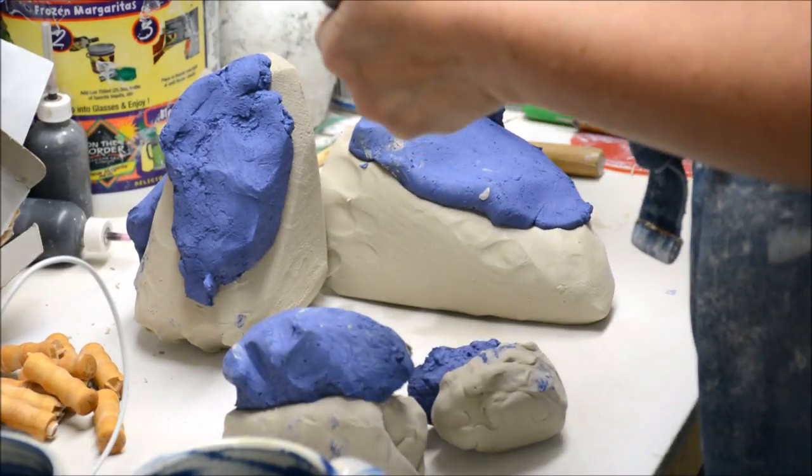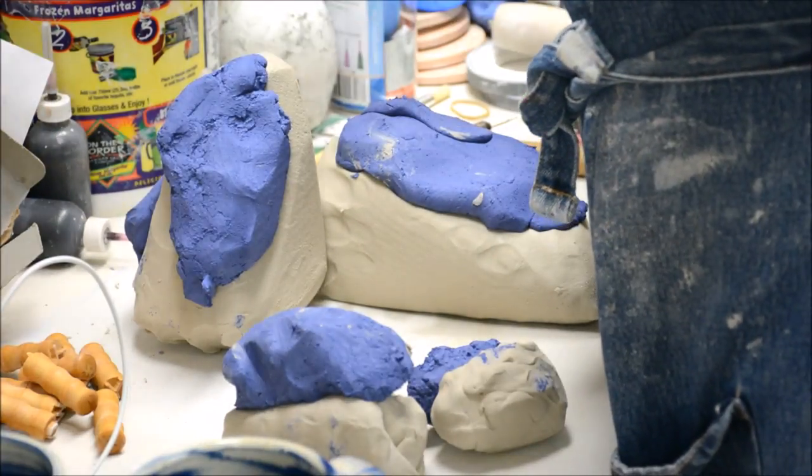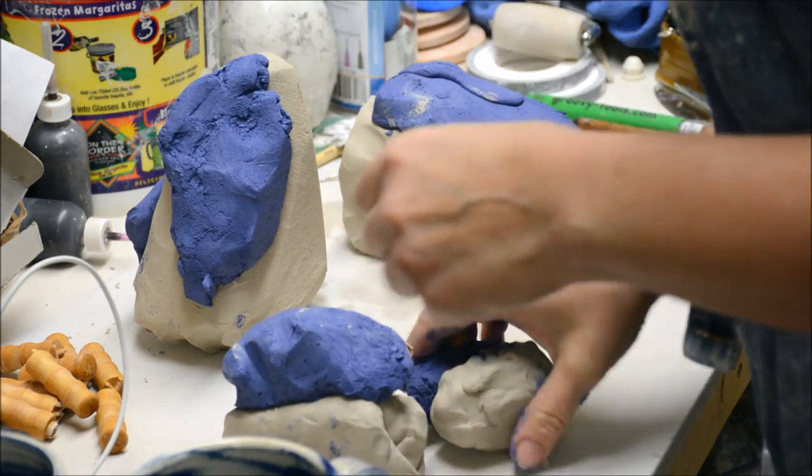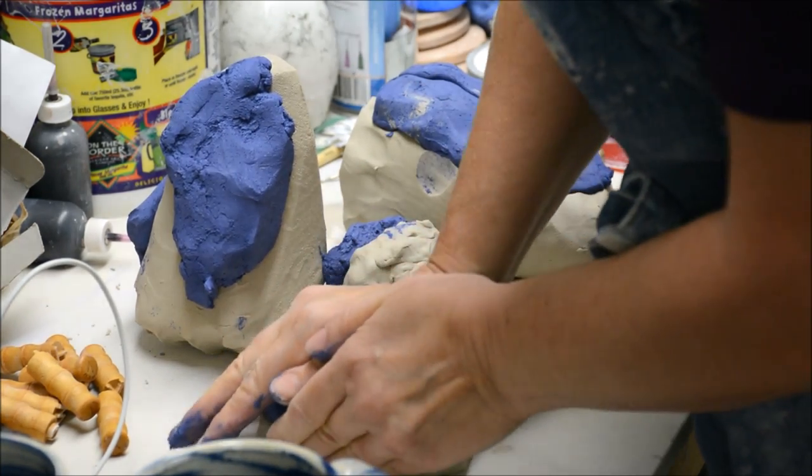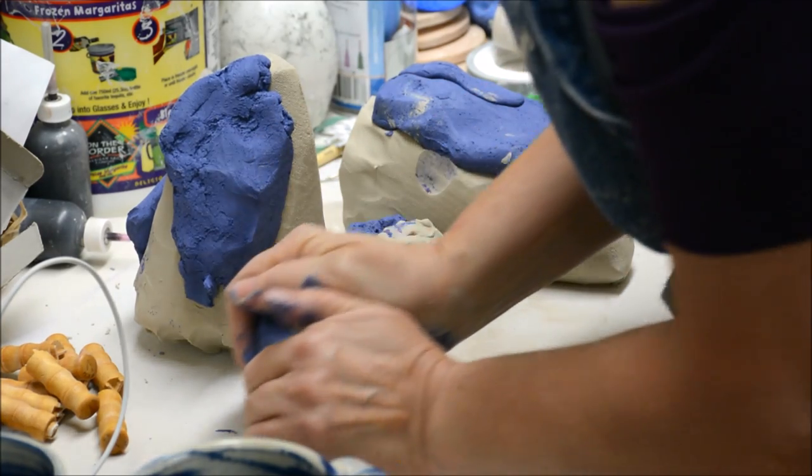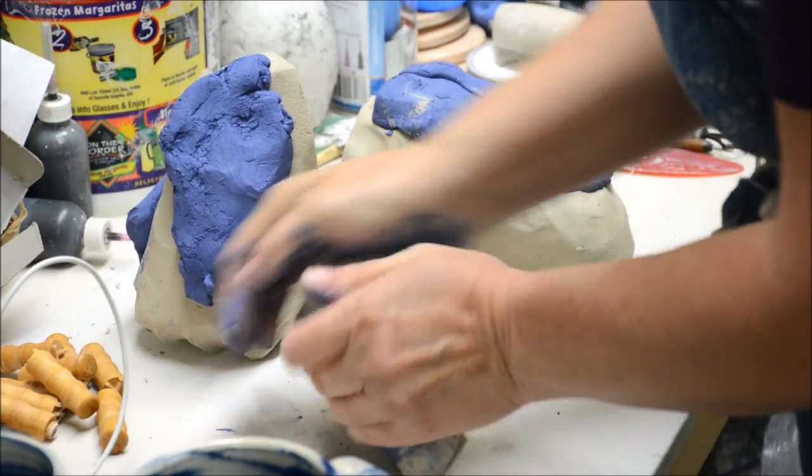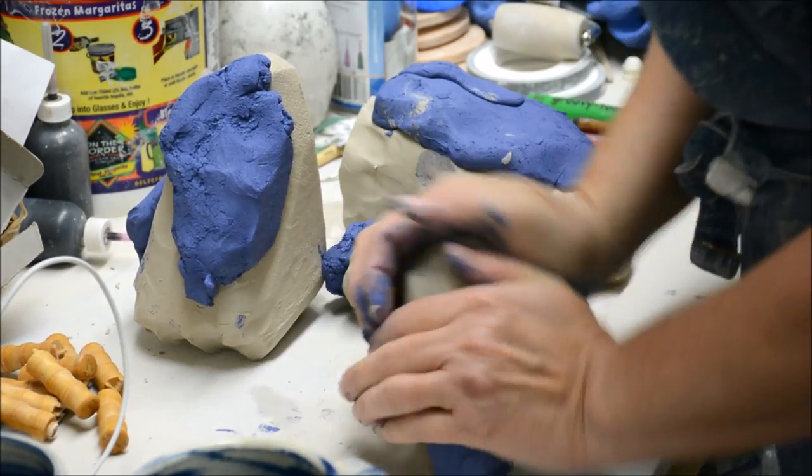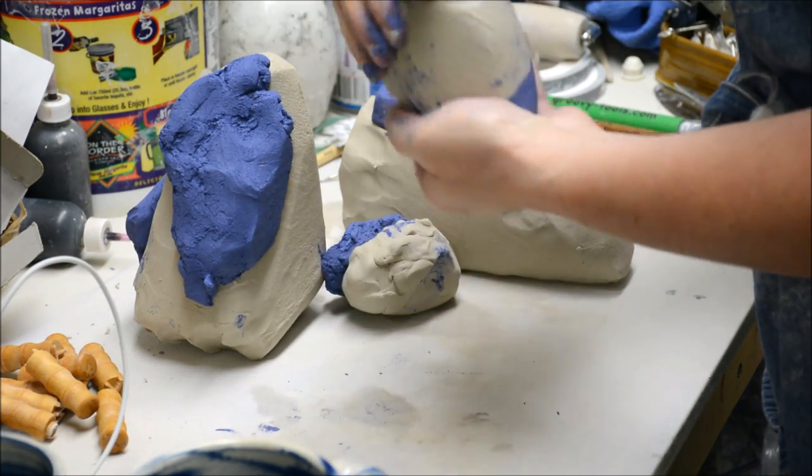So now that I have the stained part kind of stuck on there, I'm just going to wedge it in a few times. It doesn't take that much. I usually do less than 10. I'll set that aside, this little one.